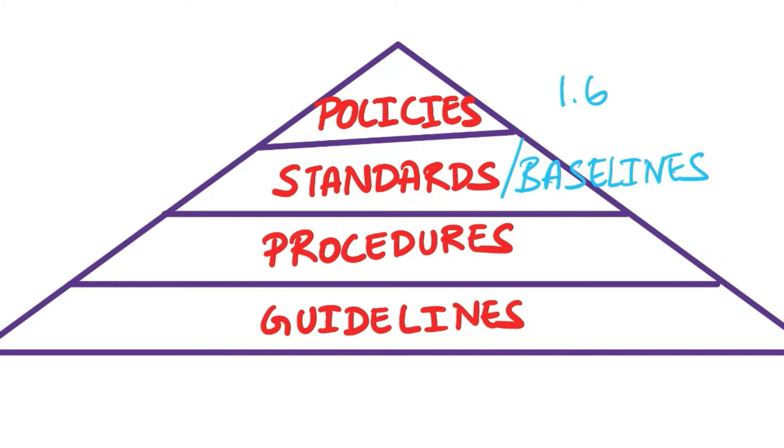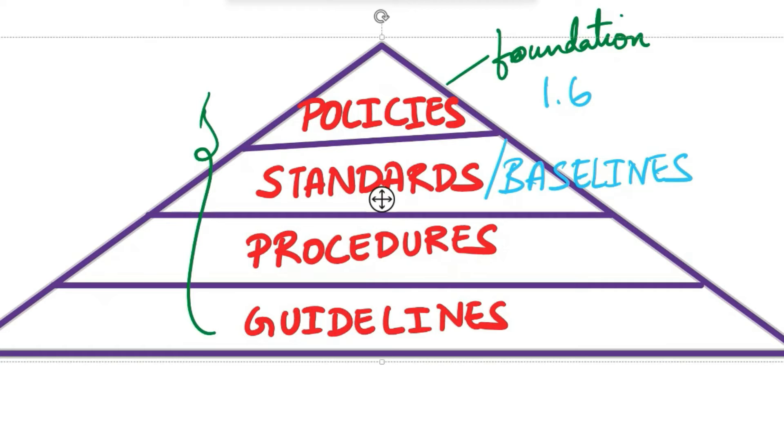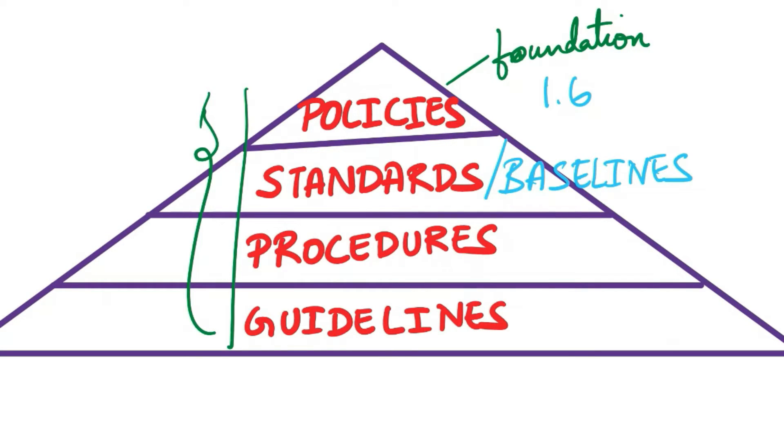While technical controls are crucial, documents like policies, standards, procedures, guidelines, and baselines form the core of an information security program. Policies set the foundational, enduring principles, while standards, procedures, and guidelines provide specific details. While these elements differ in nature, they are interconnected and play various roles.